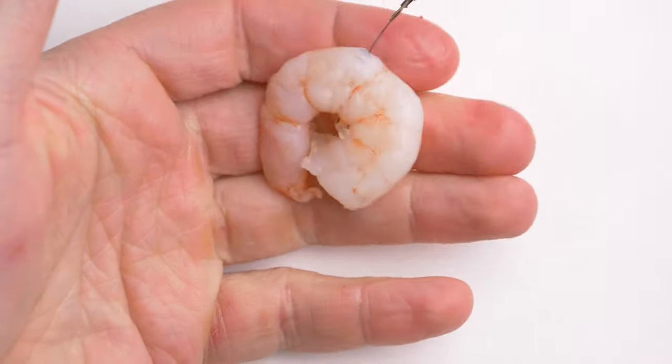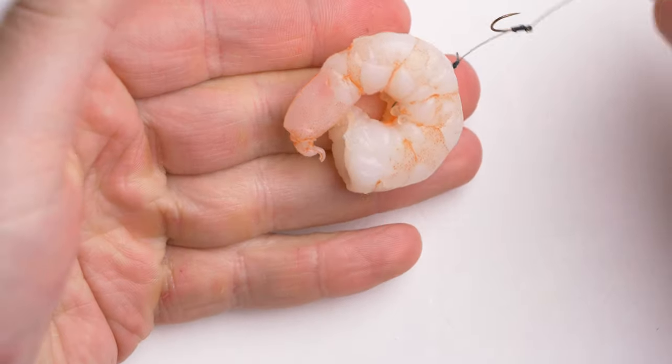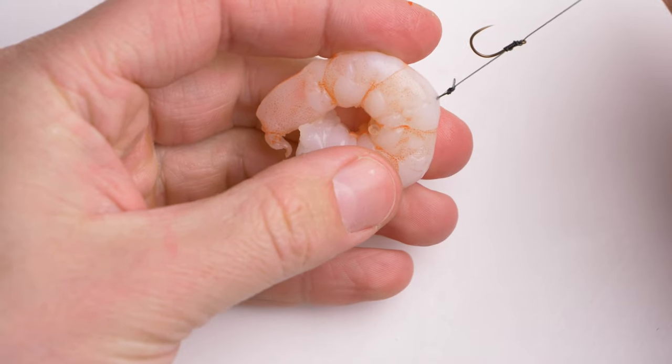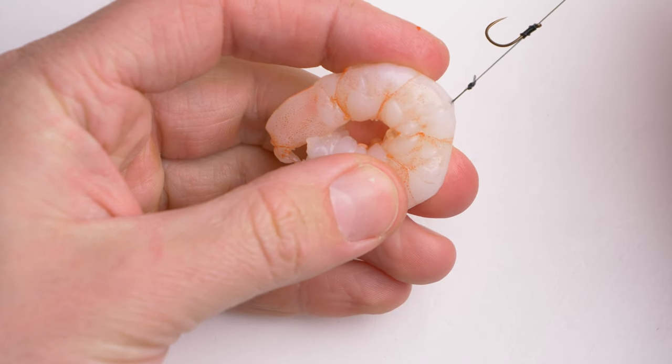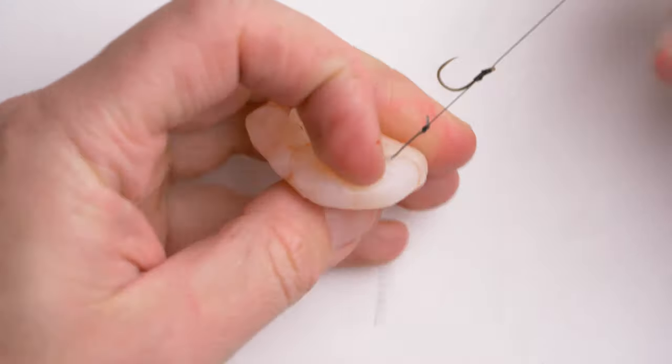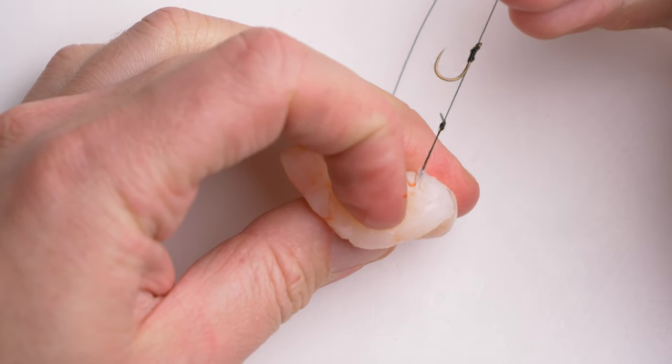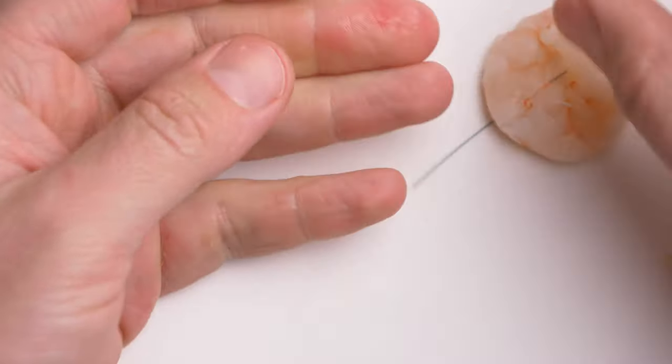Even though it looks okay at the moment, as the bait is quite soft, the line would cut through the bait quite quickly, especially on a decent chuck.